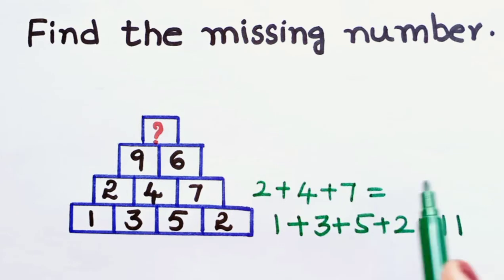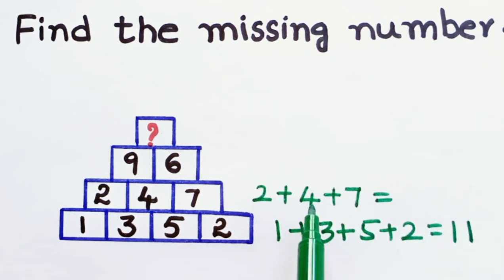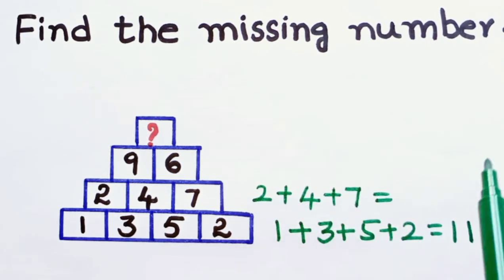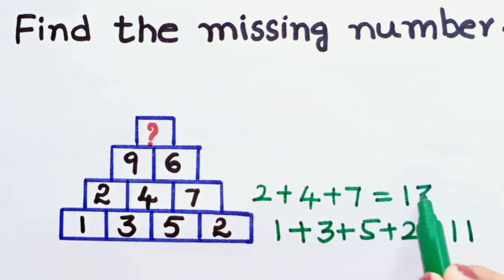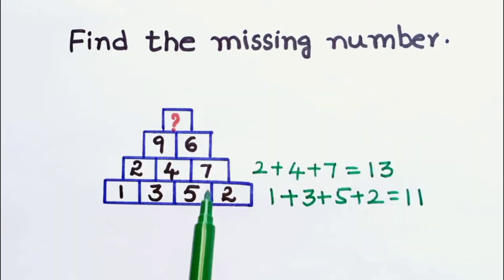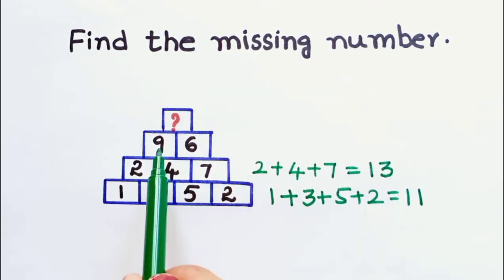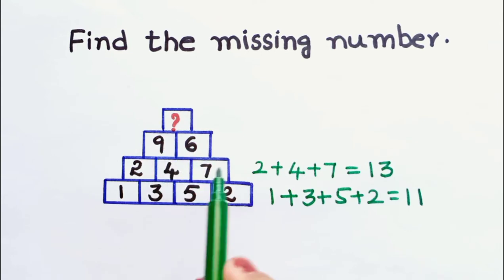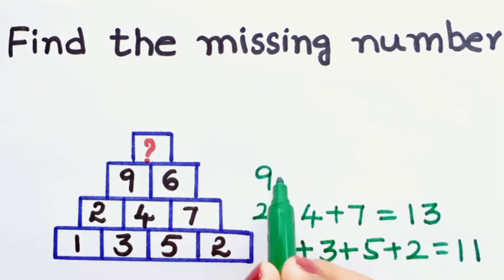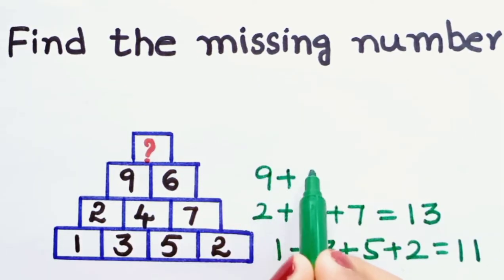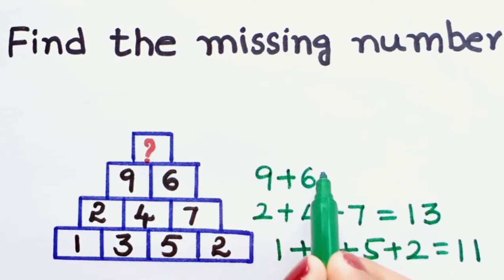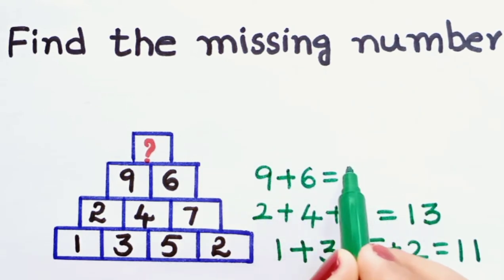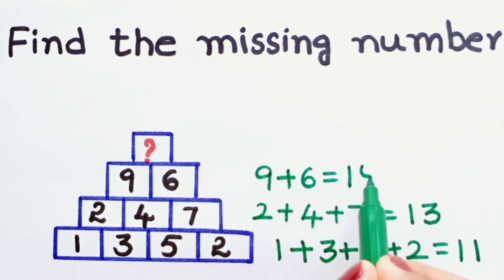2 plus 4 is 6, and 6 plus 7 is 13. Now let us add the two numbers in the third row. The two numbers are 9 and 6. 9 plus 6 is 15.